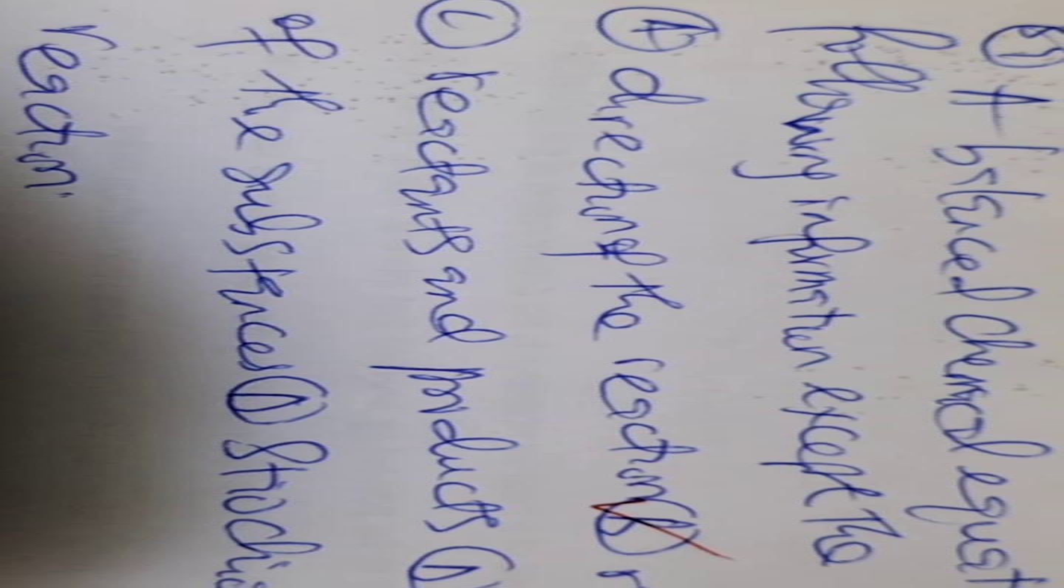Number 39: A balanced chemical equation provides the following information except rate of reaction. A balanced equation doesn't provide information about the rate of reaction. It provides information about the direction of the reaction, reactants and products, state of matter, stoichiometry of reaction, but does not provide information about the rate of reaction. So the answer is B.